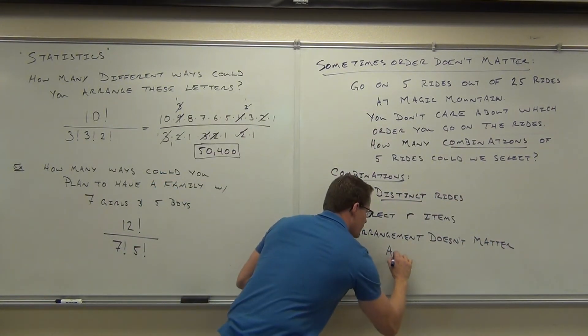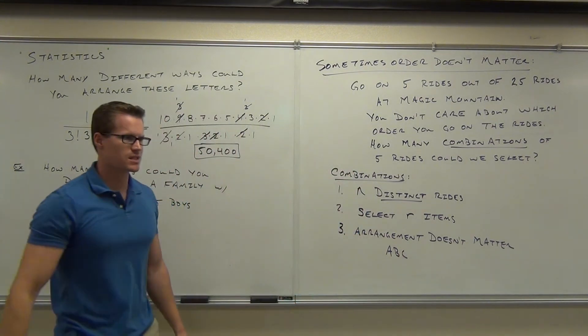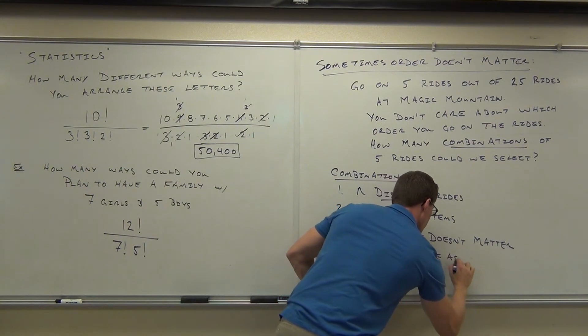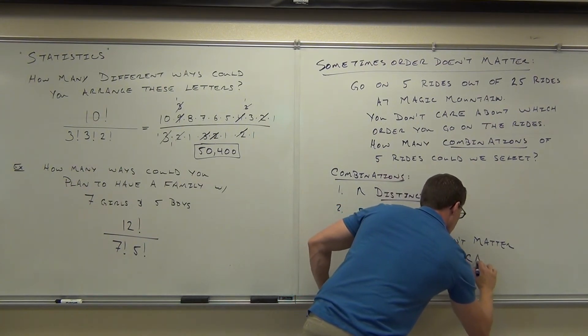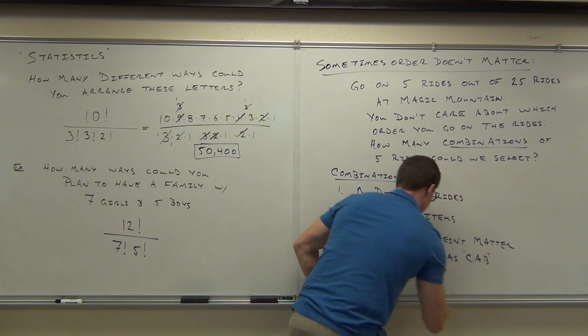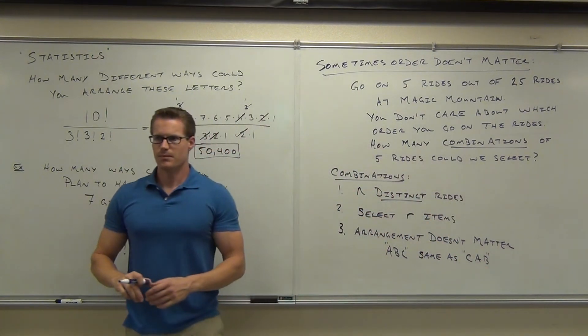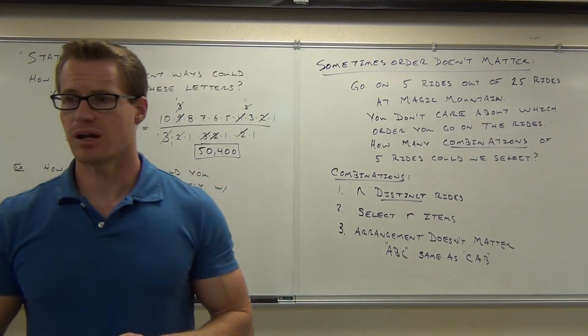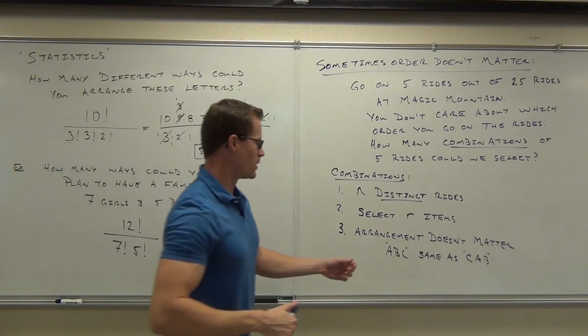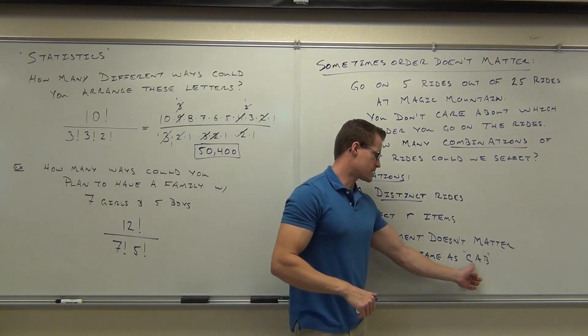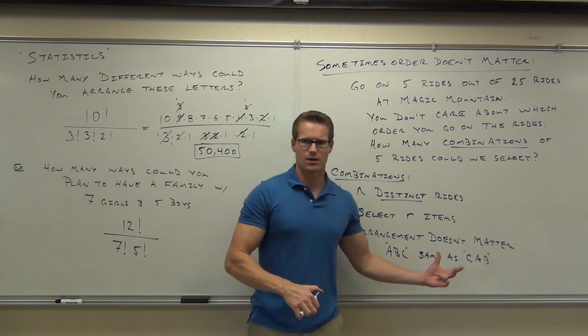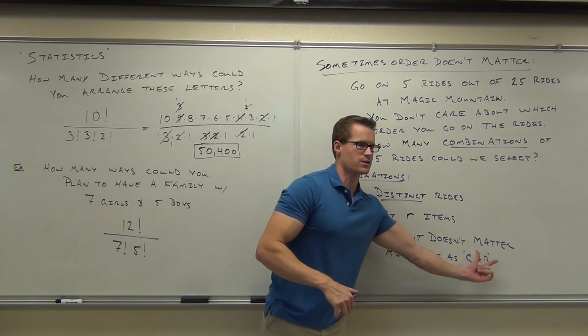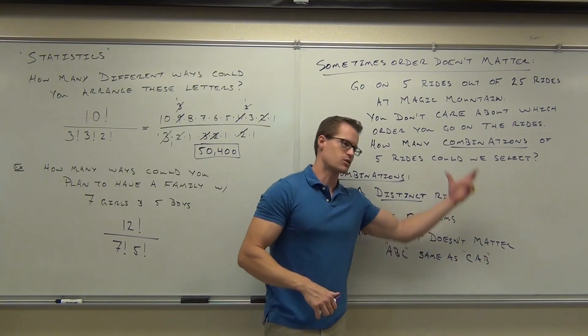So ride A, B, C, going on A first, then B first, then C first would be the same as C, A, B, or any other order. What the combination says is I'm just trying to pick out five rides. I don't care the order. As long as I'm going on ride A, B, and C, or I'm going on ride C, A, and B, those are the same for me. I'm going on those three rides in total, right? At the end of the day, I went on the same exact three rides. Are you with me on this? In our case, we only have five rides.